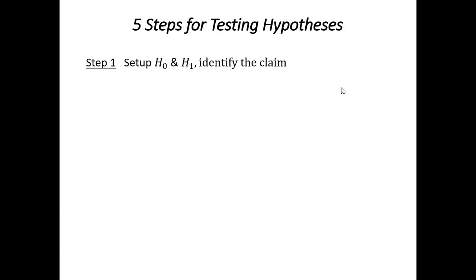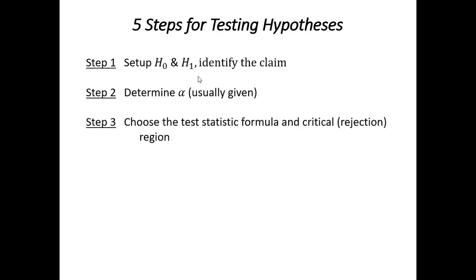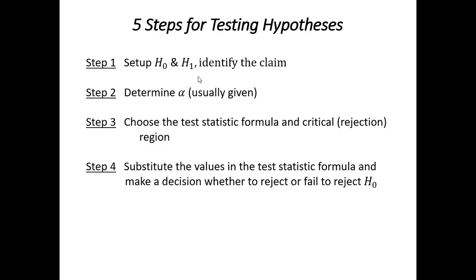Okay, just a reminder, when we run hypothesis tests, there's really five steps that we need to address. We set up the hypotheses, the null hypothesis, and the alternative. Try to identify the claim. Very important to set up these hypotheses correctly. Determine alpha, usually given in the textbook. Choose the test statistic formula and identify the critical regions or the rejection region. This is where we need to use our table. And typically, we have to look up these values.